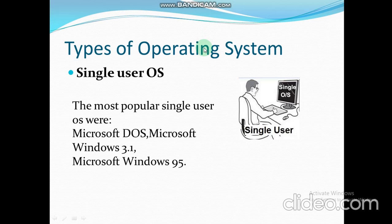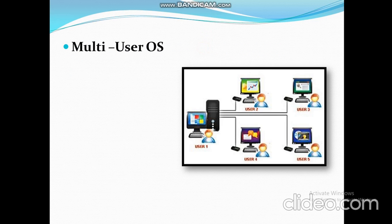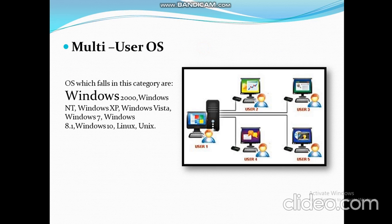Windows 95 featured the first appearance of the Start menu, taskbar, and minimize, maximize, and close buttons on each application window. Next is the multi-user operating system, which allows more than one user to use the same computer at the same time or at different times. Operating systems in this category include Windows 2000, Windows NT, Windows XP, Windows Vista, Windows 7, Windows 8, Windows 8.1, Windows 10, Linux, and Unix. Windows 2000 was the first version of Windows to allow creation of several user accounts on a single machine.